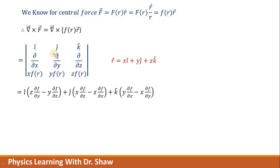If I talk about the first step, we will get i cap multiplied by del/del y operating over zf minus del/del z operating over yf. When we evaluate del/del y of zf, we treat x and z as constant because this is a partial derivative over y. Therefore, z and x are constant for this case.